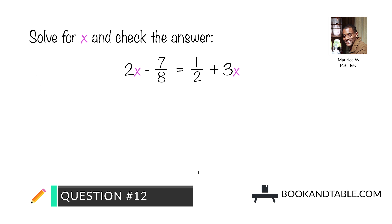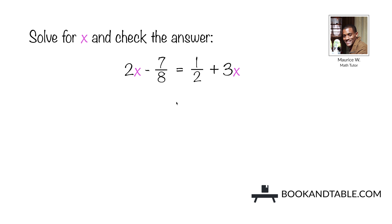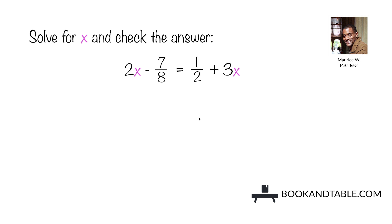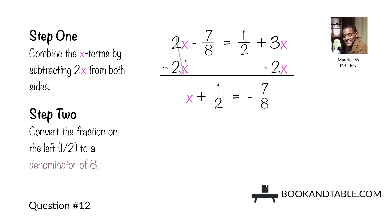Question number twelve: solve for x and check the answer. 2x minus 7/8 is equal to 1/2 plus 3x. Step one: combine the x terms by subtracting 2x from both sides. That leaves us with negative 7/8 on one side and 1/2 plus 3x minus 2x, which is positive 1x, on the other side. So x plus 1/2 is equal to negative 7/8. Now we want to remove this constant from this side.